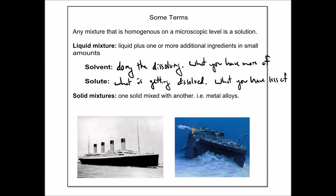This is what you have less of. In addition to liquid mixtures, you might have a solid mixture, two or more solids mixed with each other. An example of this might be a metal alloy. I have the picture of the Titanic, because there's some thoughts that the alloy used in the hull of the Titanic was a little bit faulty, and one of the reasons it led to it sinking.